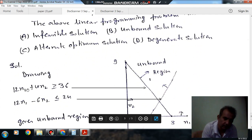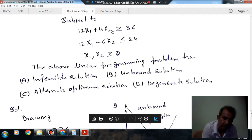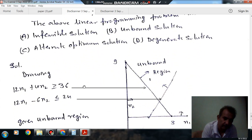So here the first constraint is 12x1 plus 4x2 greater than or equal to 36. If we put x1 equal to 0, then x2 is 9. So this is this point.